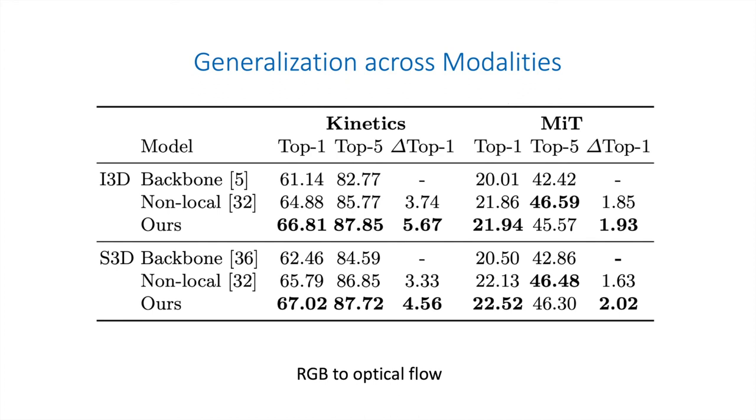Next, we examine how well our cells can generalize to new settings. We do not perform any search in the following experiments, but directly apply our cells searched for one setting to a different setting, and see if the cells can still improve the performance. Here, we apply the cells discovered on RGB frames to optical flow, and see that they can still significantly improve the classification accuracy, even though these cells are never optimized to improve the performance on optical flow.